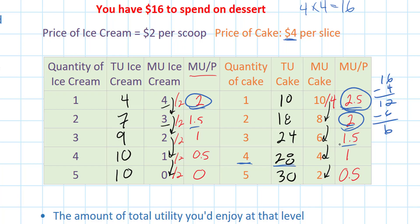The third slice of cake is going to cost me four dollars, so I'm going to buy that — subtract four, leaving me with two dollars. Then I'm going to buy my second scoop of ice cream, which costs me two dollars and also provides 1.5 utils per dollar. Subtract two dollars — my budget is now exhausted.